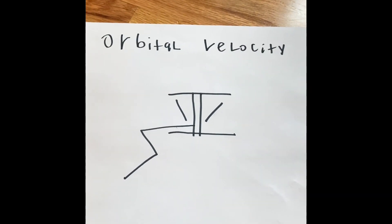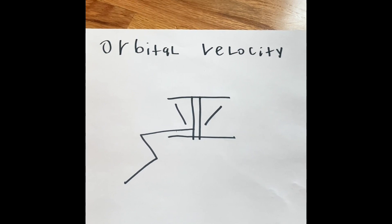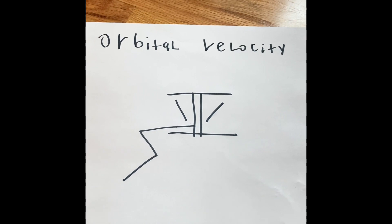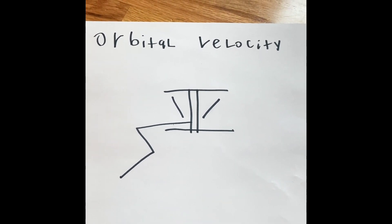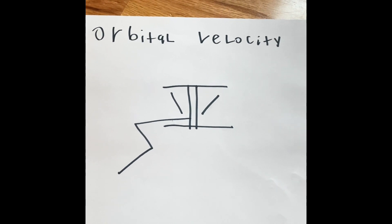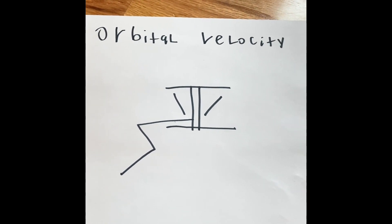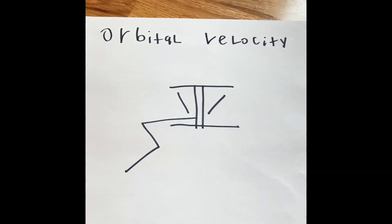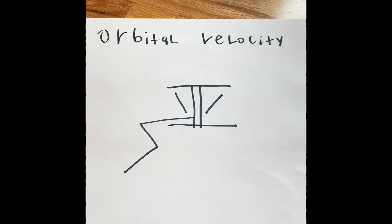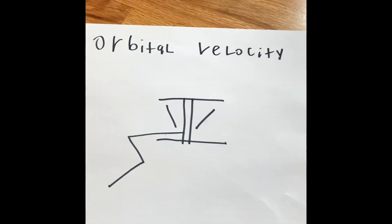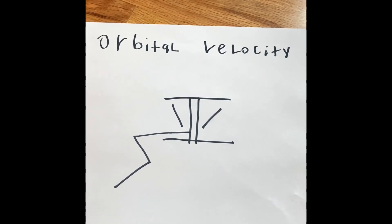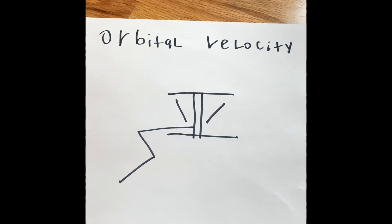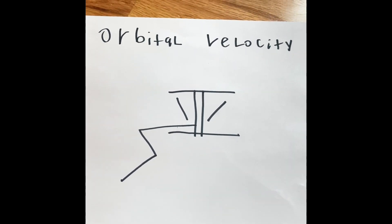Hey, welcome to Topping Your Life's Math Industry. Today we're going to look at orbital velocity, because today is New Year's Eve, which means tomorrow is January 1st, 2022, and Earth has made one revolution around the sun, meaning one year has passed. What we're going to be doing is trying to find out what the orbital velocity of a space station is, and it's on a word problem.